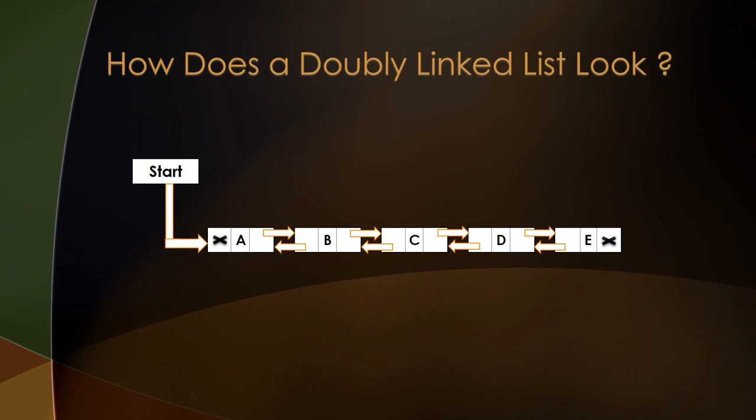This is the basic structure of how a doubly linked list looks like. Each node in the linked list, except the first and the last node, contains two pointers which point to the next node and the previous node in the linked list. Also, the previous pointer of the first node always contains a null pointer, and the last node always has its next pointer as null.